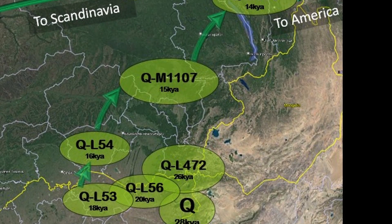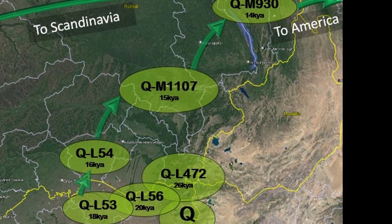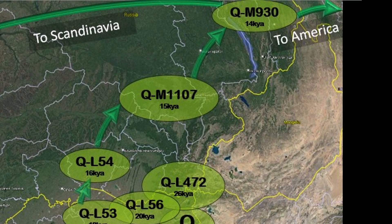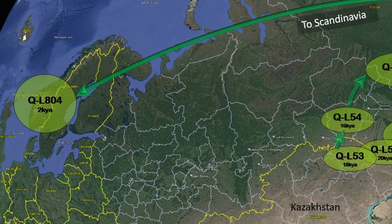The Q lineages then migrated north and east through Russia and Siberia with the QL54 and QM1107 subclades. In northern Mongolia and Siberia, the QM930 subclade emerged and the Q lineages separated. One branch headed east toward America while the other ventured west toward Scandinavia, eventually becoming the QL804 subclade around 2,000 years ago. For the purpose of this video, we will follow the western branch into Scandinavia, as my own Y haplogroup is QL807, which arrived in America from this direction.